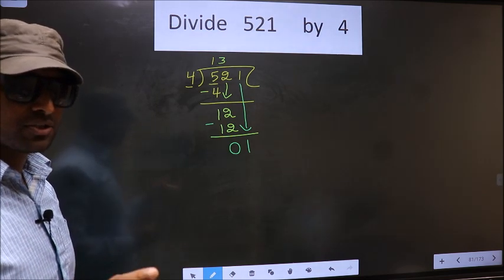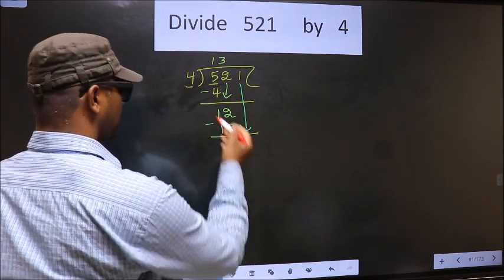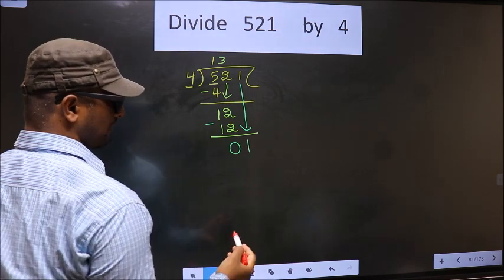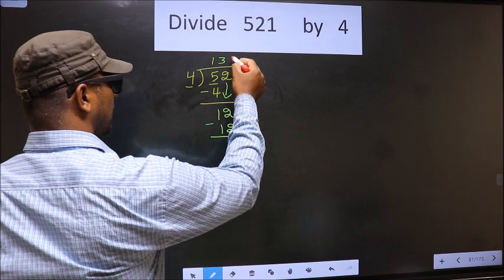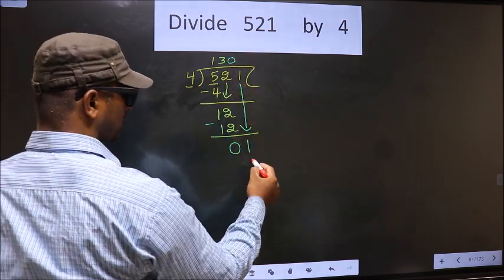Instead, what you should think of is: what number should we write here? If we write 4 here, that is larger than 1. So what we do is take 0 here. So 4 times 0 equals 0.